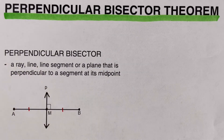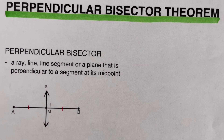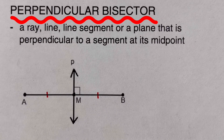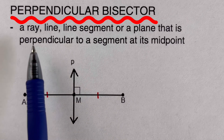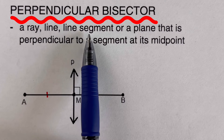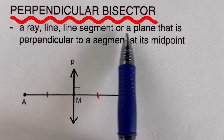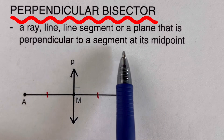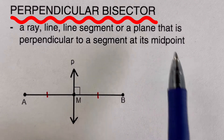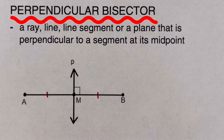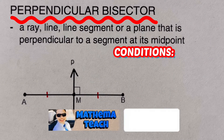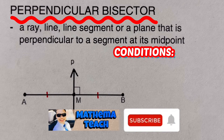If we put them together — Perpendicular Bisector — what does it mean? A Perpendicular Bisector is a ray, line, line segment, or a plane that is perpendicular to a segment at its midpoint. There are two conditions that must be met in order for something to be considered a Perpendicular Bisector.